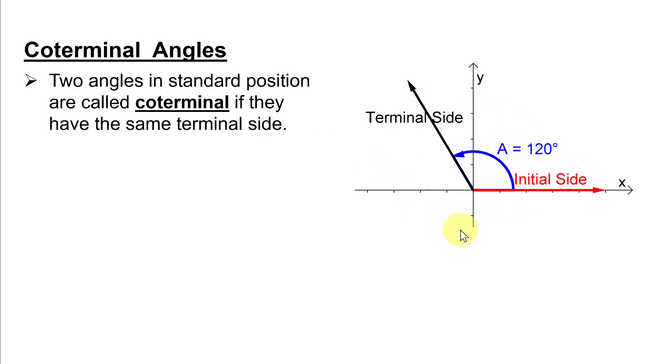Here's my angle A drawn in standard position. That means the vertex is at the origin. The initial side is along the positive x-axis. Since A is positive, I'm going to rotate in a counterclockwise direction, 120 degrees, which will give me the terminal side in quadrant 2.